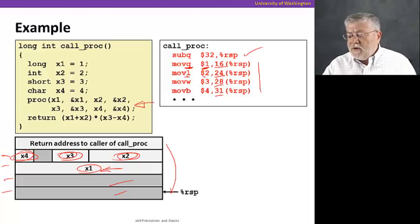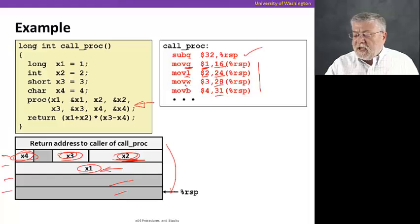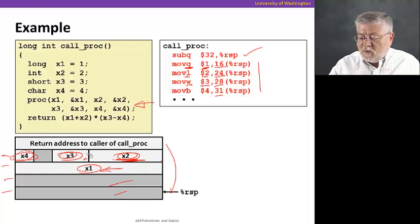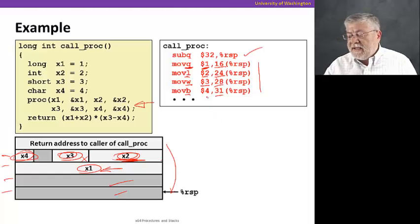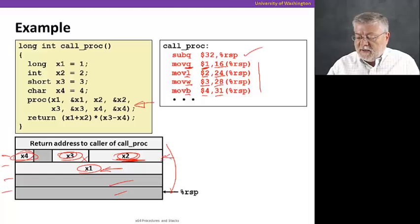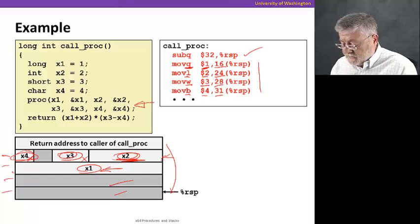We put the eight byte quantity, the quad word, that was value one for x1 at 16 plus the stack pointer. That's at this location. Then we moved a long word, value two, to 24 plus the stack pointer at this location. Then a word, or rather 16 bits, value three, at 28 plus the stack pointer. 24 was here, four more over puts us here at x3. And then finally a single byte of value four at 31 plus the stack pointer. That's 24 here, and then seven over puts us over where we've labeled x4 as that single byte.